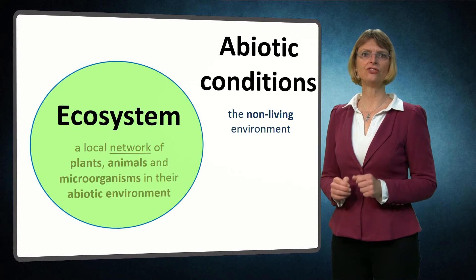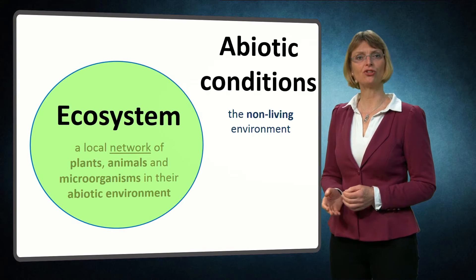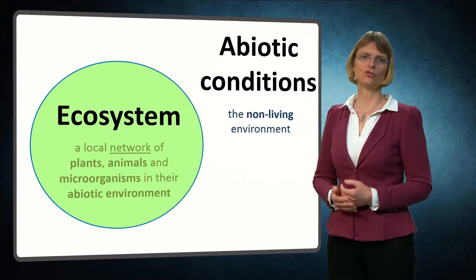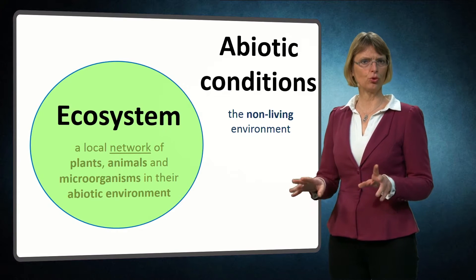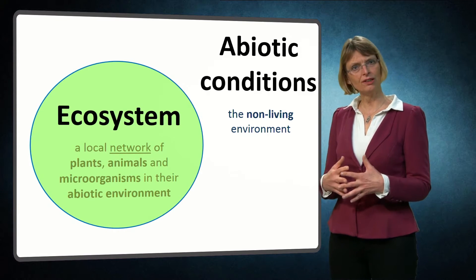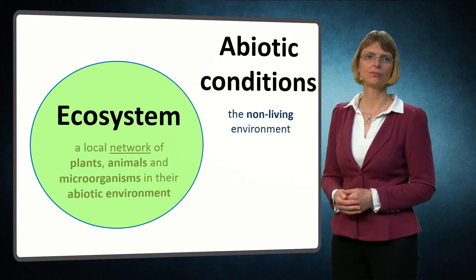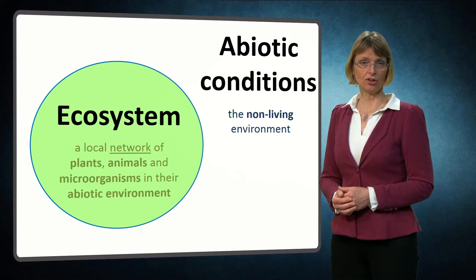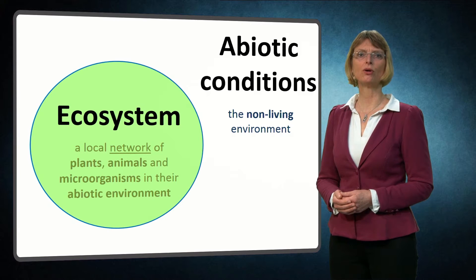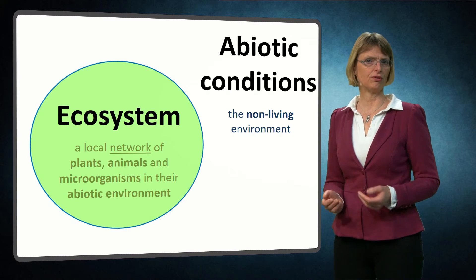Before we can build with nature, it is important to understand key factors in the formation and functioning of ecosystems. An ecosystem is a local network of different organisms such as plants, animals and microorganisms that live in interaction with each other and with their non-living abiotic environment. I will now discuss six abiotic factors that largely determine the abiotic boundary conditions for ecosystem development in coastal and riverine areas.